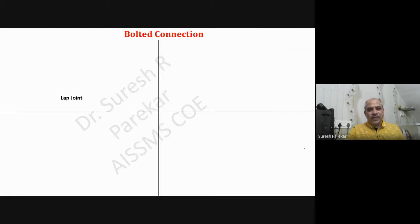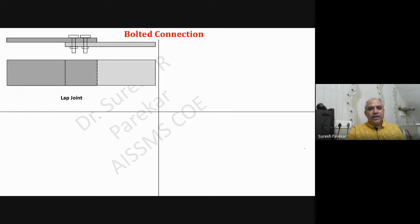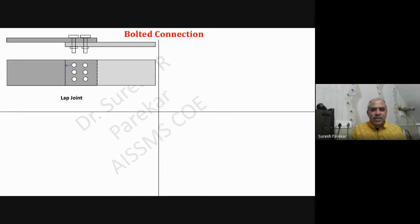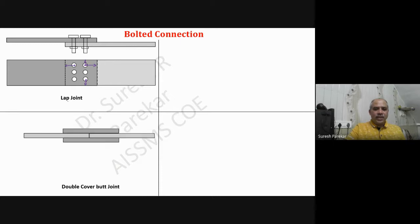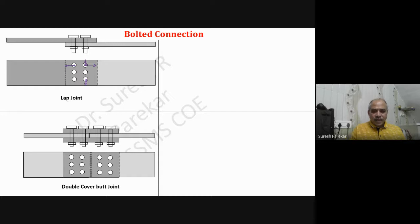For the bolted connection, first we have the lap joint. Try to plot the bolts exactly below the upper bolt and keep edge distances the same - this distance and this distance same, and this distance and this distance same. Then we have the double cover butt joint, where we have one cover plate on each side. If provided on one side only, that is a single cover butt joint.